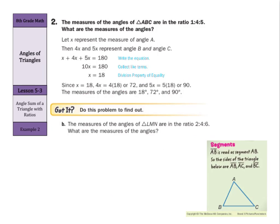The measures of the angles of triangle ABC are in the ratio 1 to 4 to 5. If we let the ratio parts equal 1x, 4x, and 5x, then x plus 4x plus 5x equals 180. Simplifying: 10x equals 180, so x equals 18. But we're not done — we calculate each angle: 1 times 18 equals 18 degrees, 4 times 18 equals 72 degrees, and 5 times 18 equals 90 degrees.